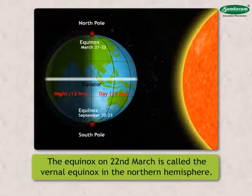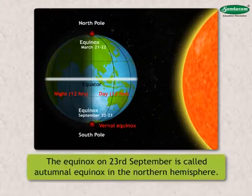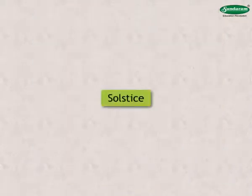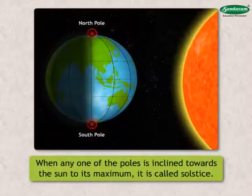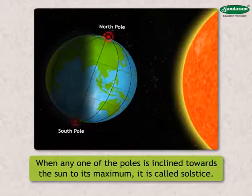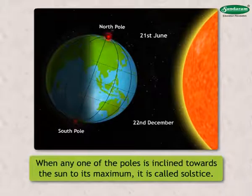The equinox on 22nd March is called the vernal equinox and the equinox on 23rd September is called the autumnal equinox in the northern hemisphere. When any one of the poles is inclined towards the sun to its maximum, it is called a solstice. This position occurs on 21st June and 22nd December, and these are solstice days.